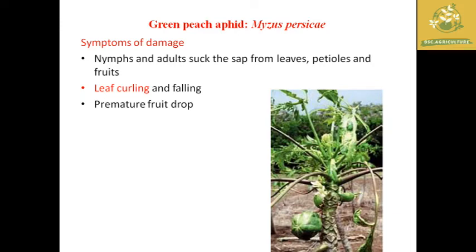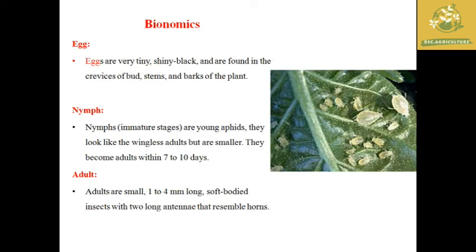The next pest is Green Peach Aphid, which is one of the major and serious pests in papaya, with the scientific name Myzus persicae. Both the nymph and adult suck plant leaves, petioles, and even fruit. While sucking the leaves, they cause leaf curling and falling of leaf structures, and premature fruit drop can also be observed. In severe cases, they show a dieback symptom in most plants.